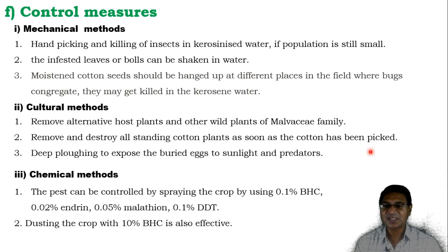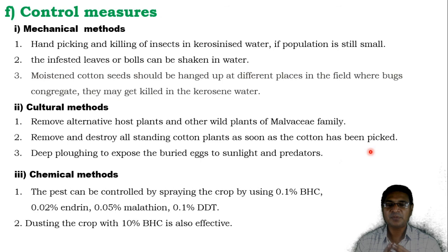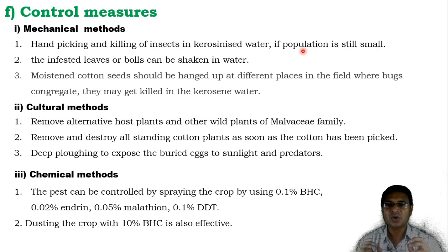The next method is the chemical method, where the pest can be controlled by spraying the crop with 0.1% BHC, 0.02% Endrin, 0.05% Malathion, 0.1% DDT, or many other chemicals available in the market. Dusting the crop with 10% BHC is also effective to control this pest.